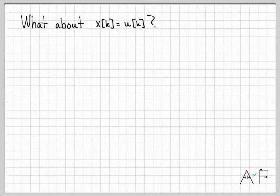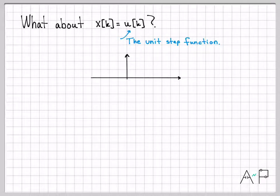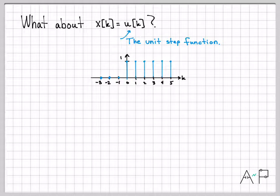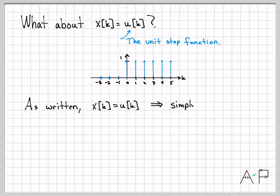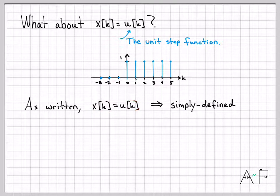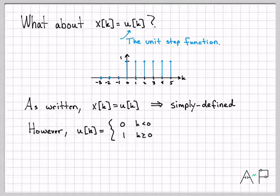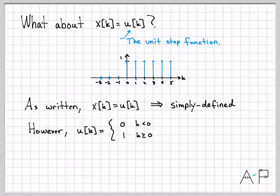Things can get a little tricky. For instance, what about x of k equals u of k? Remember, u of k is the unit step function — it's 0 for all time less than 0 and equal to 1 for time 0 and greater. As written, x of k equals u of k is a single equation true for all time, so I would call this a simply defined signal. However, buried in the notation is the fact that u of k itself is actually a piecewise defined signal.